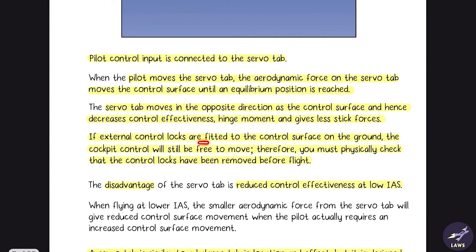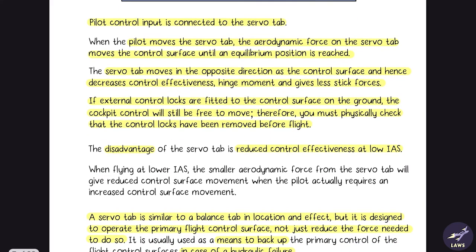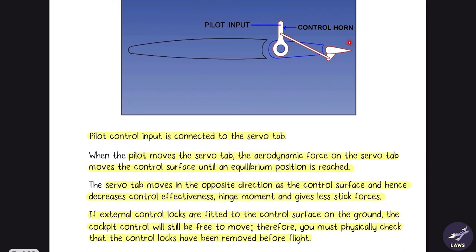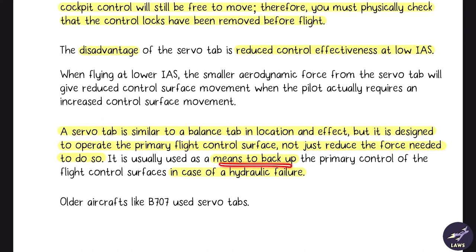If external locks are fitted to the control surface on the ground, the cockpit control will still be free to move, because the cockpit controls are connected to the servo tab and not the control surface. Therefore, you must physically check that control locks have been removed before flight. The disadvantage of the servo tab is that control effectiveness is reduced at low IAS, as it cannot generate enough aerodynamic force to move the control surface. The servo tab can be used as a means of backup in case of hydraulic failure.